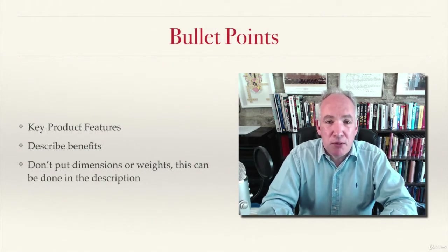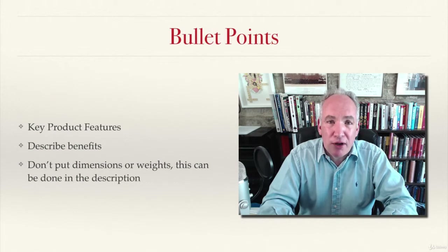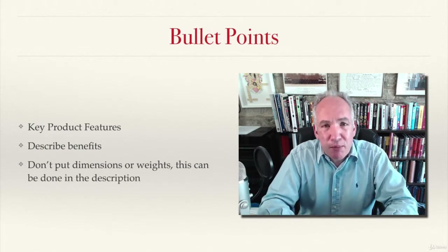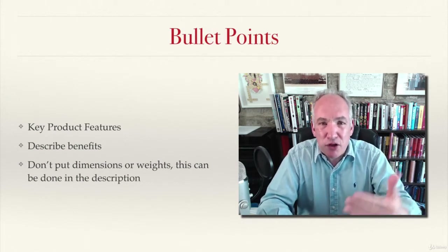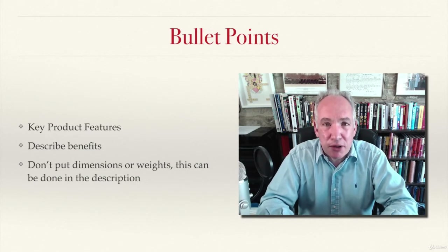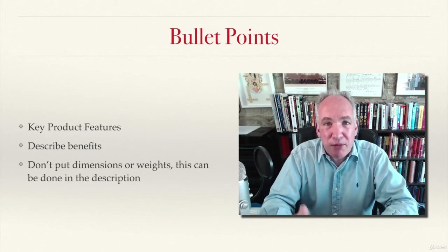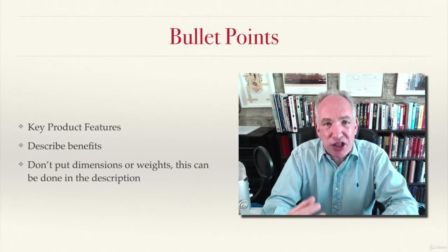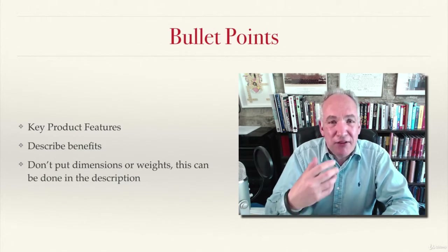When it comes to bullet points, these are the key product features which are listed. Don't put in the dimensions and the weight — you can put that lower down in the main description. What you need to be doing is selling in these bullet points and actually explaining the features.